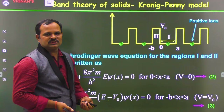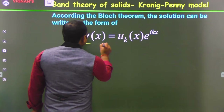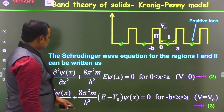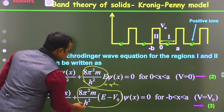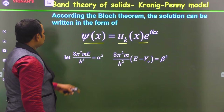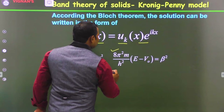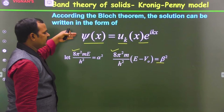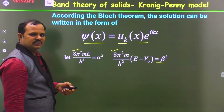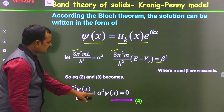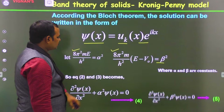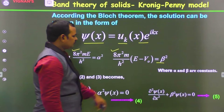These periodic potential equations can be solved using Bloch solutions: ψ(x) = u_k(x)·e^(ikx). We let α² = 8π²mE/h² and β² = 8π²m(E − V₀)/h², where α and β are constants. Substituting into the equations, equation 2 becomes d²ψ/dx² + α²ψ(x) = 0 and equation 3 becomes d²ψ/dx² + β²ψ(x) = 0. Here α is a function of energy and β is also a function of energy.